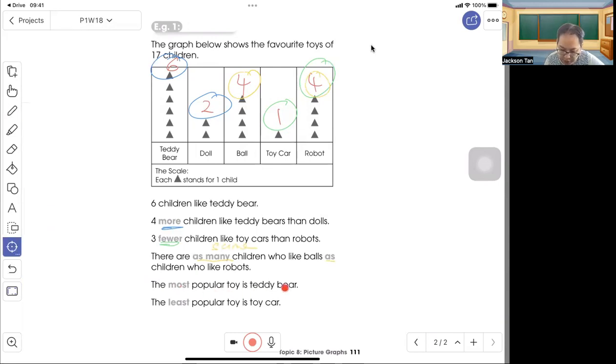The most popular toy is teddy bear because it has the highest number of children. The least popular toy is toy car. There's only one child that picks toy car.